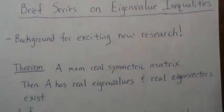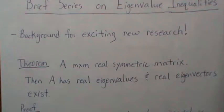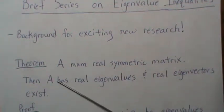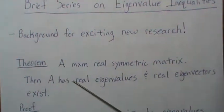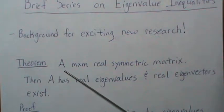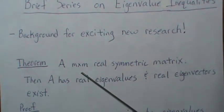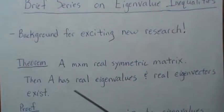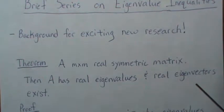So let's jump right in. The first theorem we're going to show is that any symmetric matrix, let's say dimension m by m, has real eigenvalues and real eigenvectors can be found, or you know that they exist.